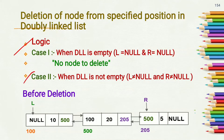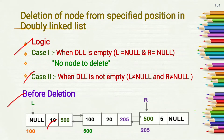Case 2 is when the doubly linked list is not empty, that means the value of l and r is not equal to null. Before deletion, we have given a doubly linked list having 3 nodes containing values 10, 20, and 5. L points to the first node and r points to the last node.